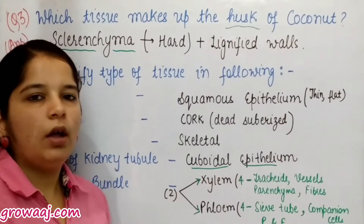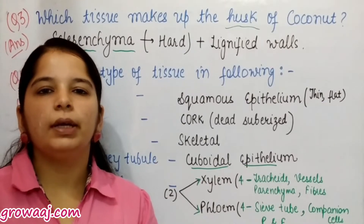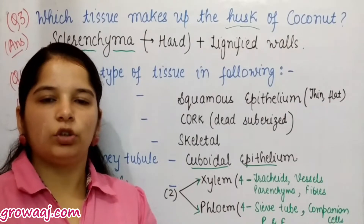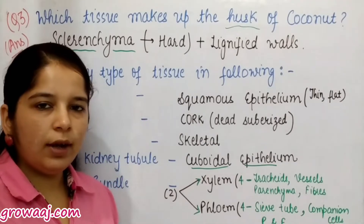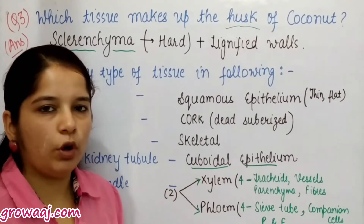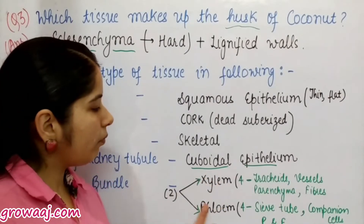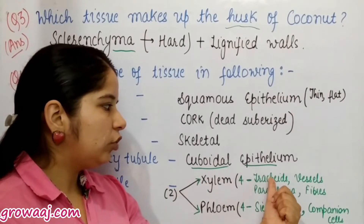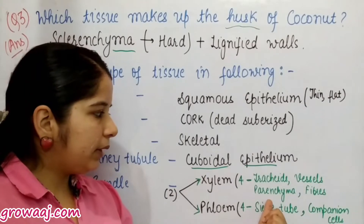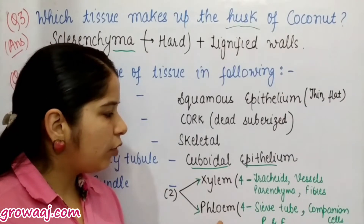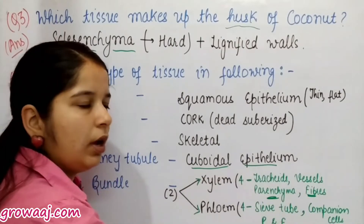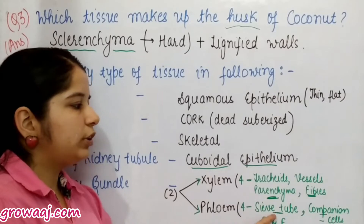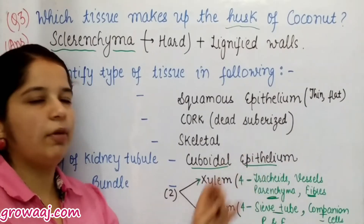Next is vascular bundle. In plants, vascular bundles are of two types: xylem for water transport and phloem for food transport. Xylem contains tracheids, vessels, xylem parenchyma, and xylem fibers. Phloem contains sieve tubes, companion cells, phloem parenchyma, and phloem fibers. So remember: tracheids and vessels are in xylem, and sieve tubes and companion cells are in phloem.